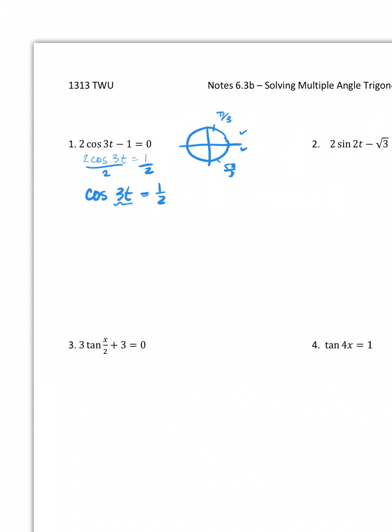So that's up here at pi over three, and then down here at five pi over three. So knowing that, I can then say, okay, 3t is equal to pi over three, and 3t is equal to five pi over three, and then we need to finish solving it for t.